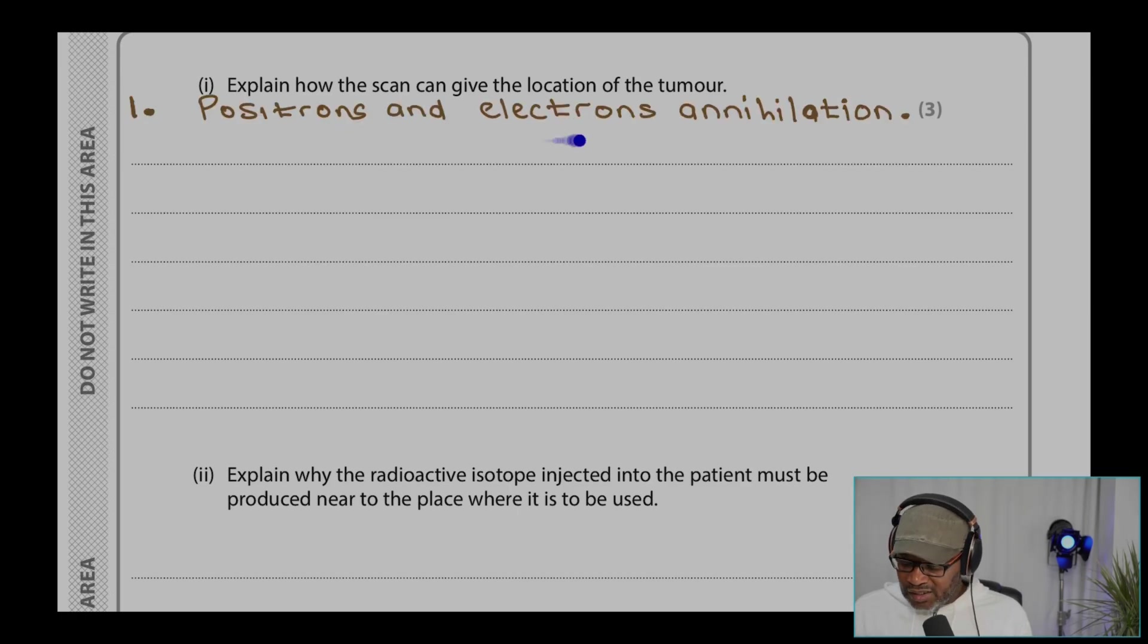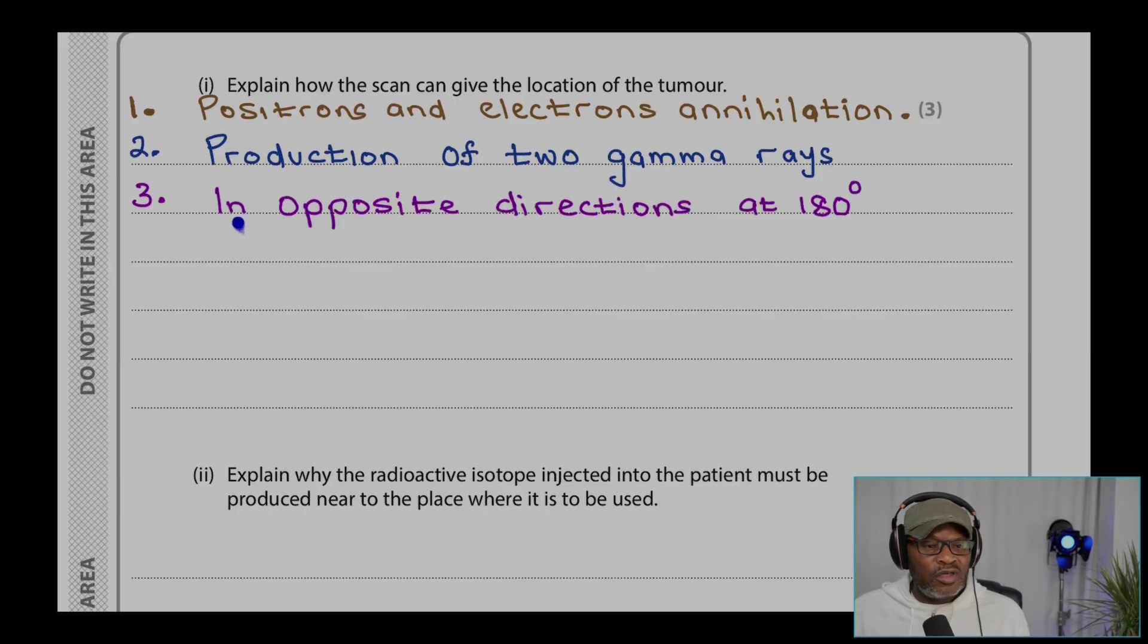Well, like we said earlier, positrons and electrons annihilation. Annihilation means they disappeared and convert the matter into energy. And the energies are the gamma in the opposite direction. Two, production of two gamma rays in the opposite direction, in the opposite direction at an angle of 180 degrees.